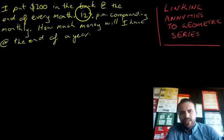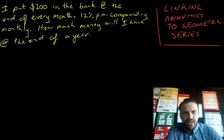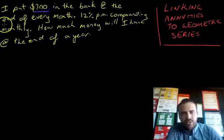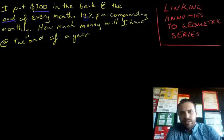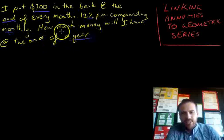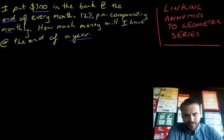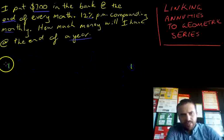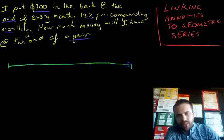The problem: I put two hundred dollars in the bank at the end of every month, at 12 percent per annum compounding monthly. How much money will I have at the end of the year — so one year? First of all, I'm going to draw a diagram.